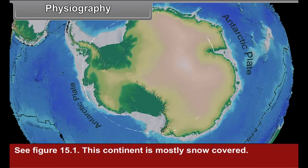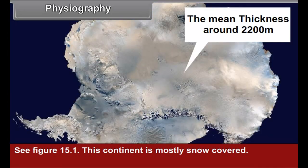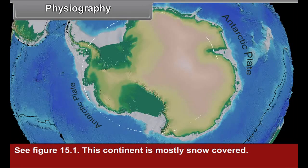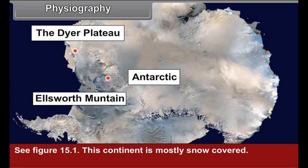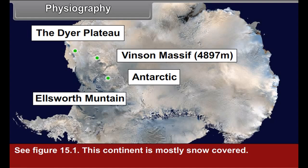This continent is mostly snow-covered. The mean thickness of snow here is around 2200 meters, whereas the maximum thickness is around 4500 meters. The central portion of this continent is a plateau and there are a few mountain ranges along the sides. The Dyer Plateau is situated on the Antarctic Peninsula. Ellsworth Mountain is to the south of it. Vinson Massif, at 4897 meters, is the highest peak in this continent.